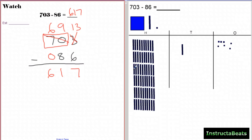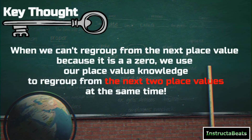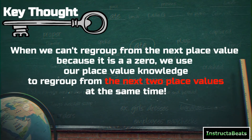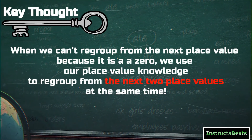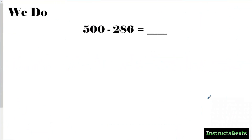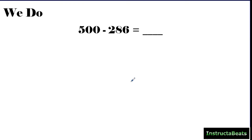The shortcut is really just using your place value knowledge: seven hundreds was really seventy tens, so I could take away one ten, which left me with sixty-nine tens, and then I was set up to subtract. The key thought: when we can't regroup from the next place value because it is a zero, we use our place value knowledge to regroup from the next two place values at the same time. Let's look at another example — find the difference of 500 and 286.